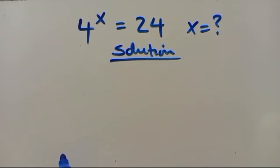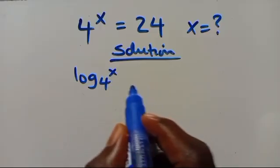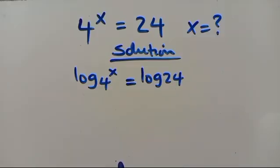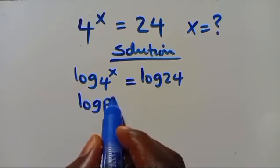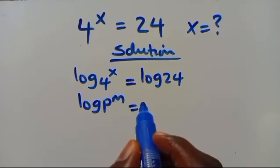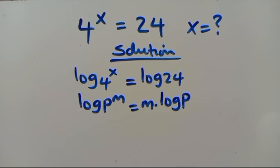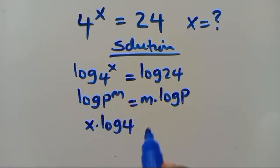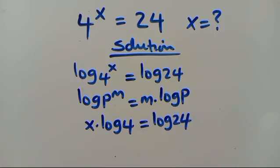From here, let's introduce log to both sides, so we have log 4 to the power of x equals log 24. Recalling the rule: log p to the power of m equals m multiplied by log p, we get x times log 4 equals log 24.